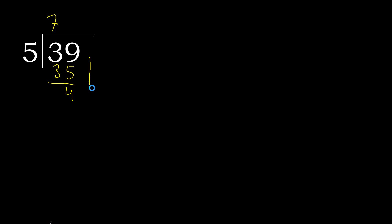Next — that is not a number, therefore complete. Always complete with 0. Here, with a decimal point. 0 point — 40.